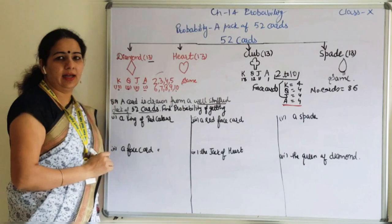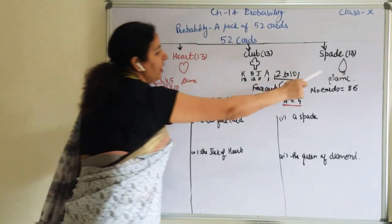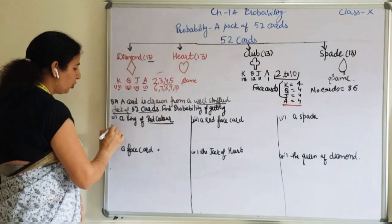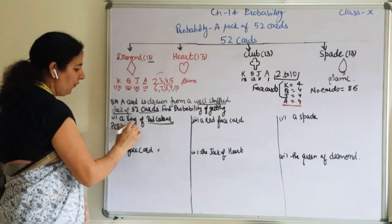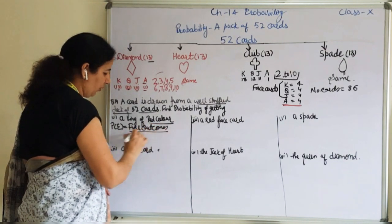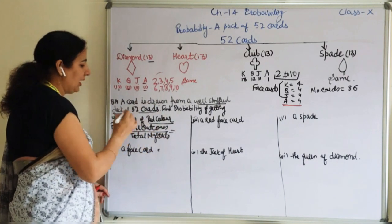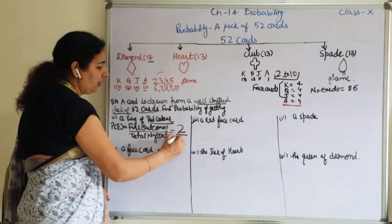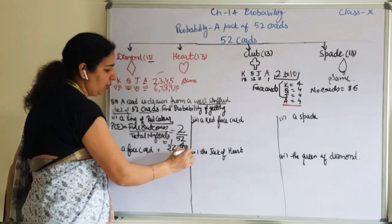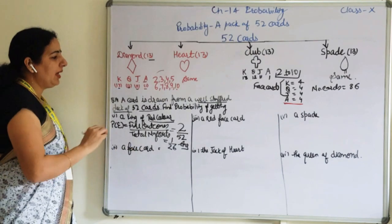Part one: find the probability of getting a king of red color. We go to king and see how many kings there are. There are four kings, but we only take the red color kings. Red color kings are two in number. So probability equals favorable outcomes divided by total outcomes = 2/52, which reduces to 1/26.